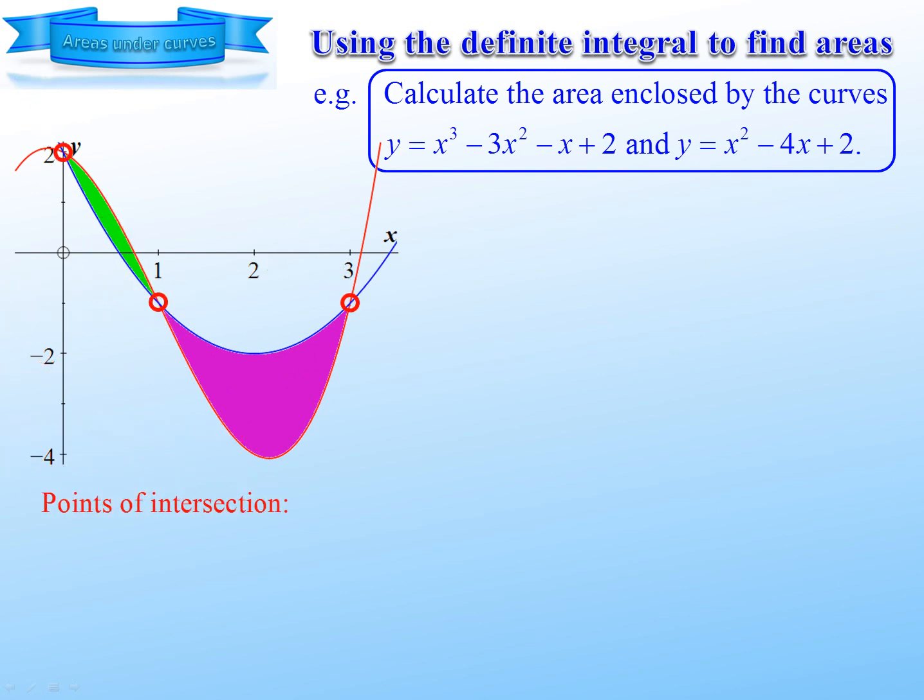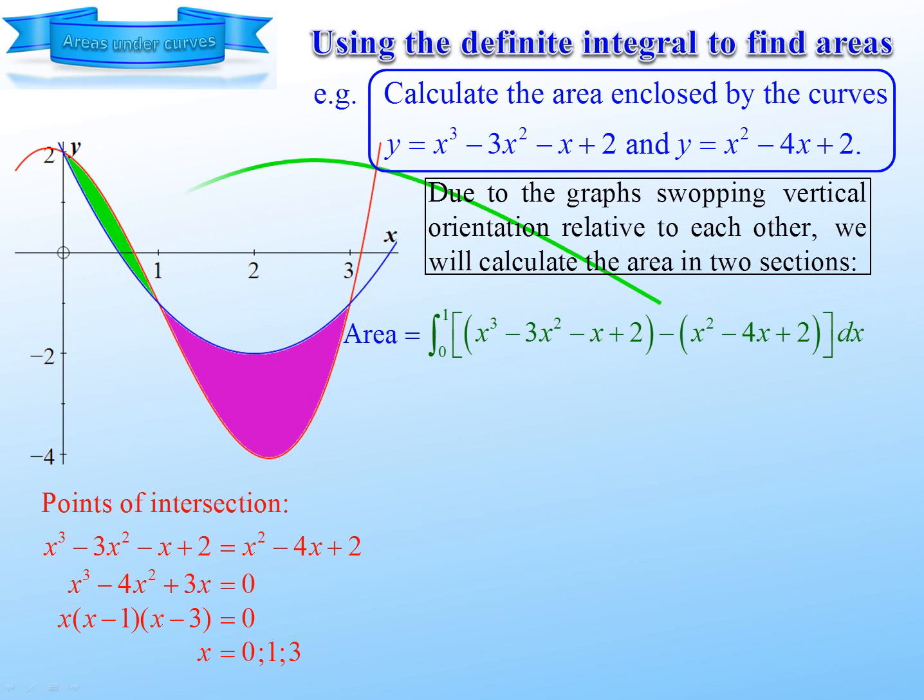So we find the points of intersection. Put that equal to that. Simplify to that. We can take out a common factor of x and simplify and factorize the rest. And it gives us 0, 1, 3. So therefore this one here is going to be the integral of the cubic subtract the integral of the parabola. Integral of the cubic subtract the parabola. And this is the integral of the parabola subtract the cubic.